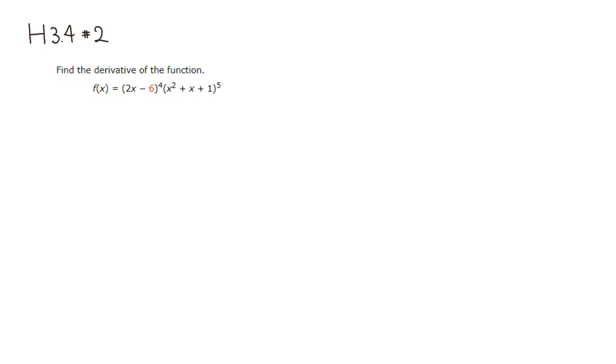We have two things multiplied together, so we're going to use the product rule. This is the first guy, and this is the second guy.